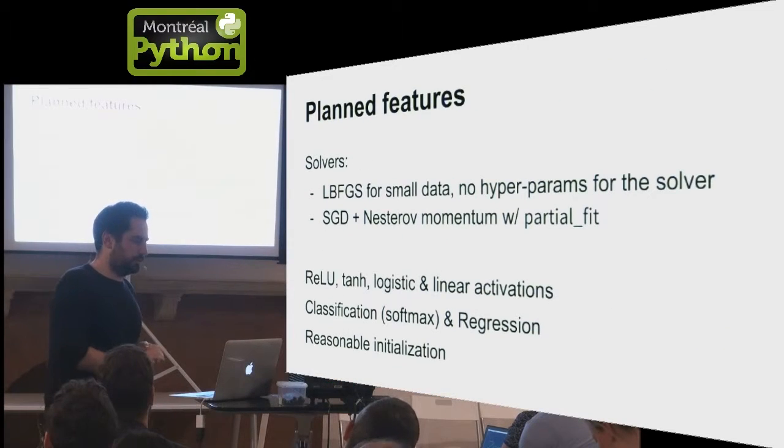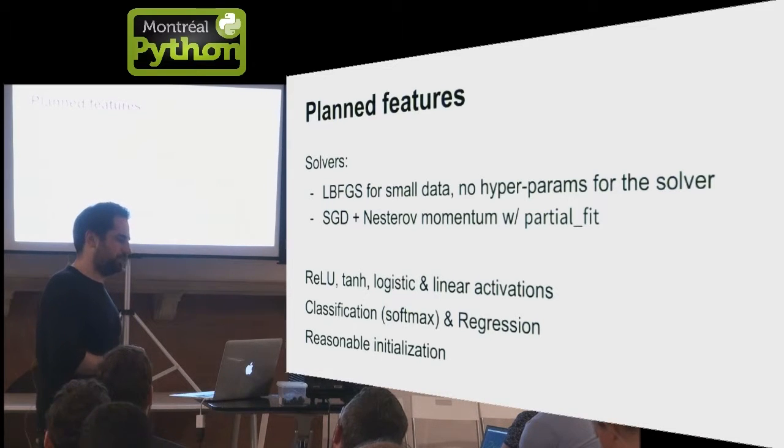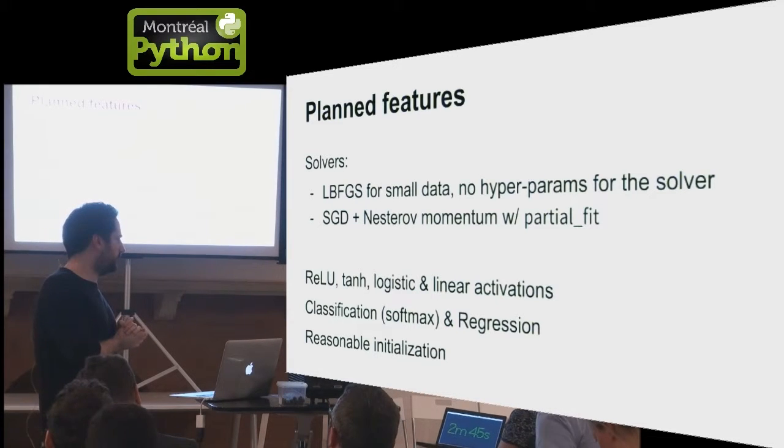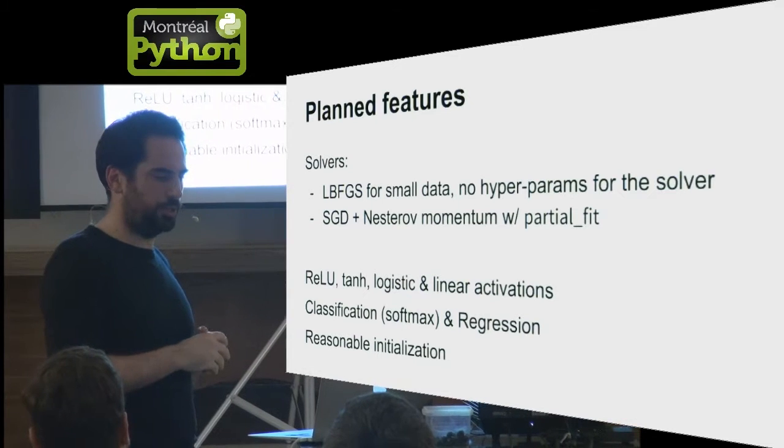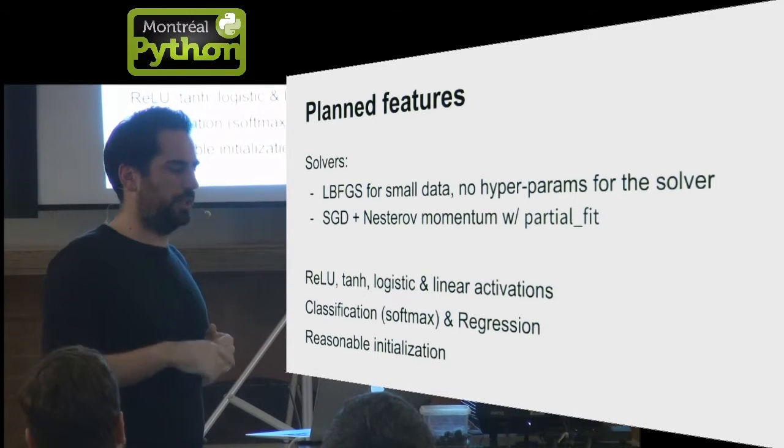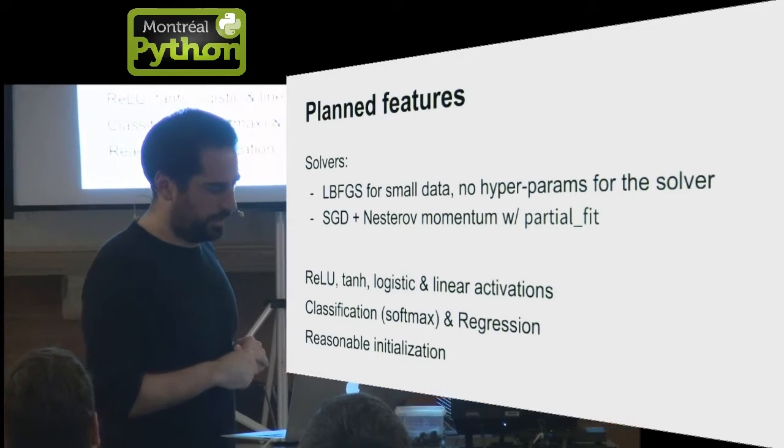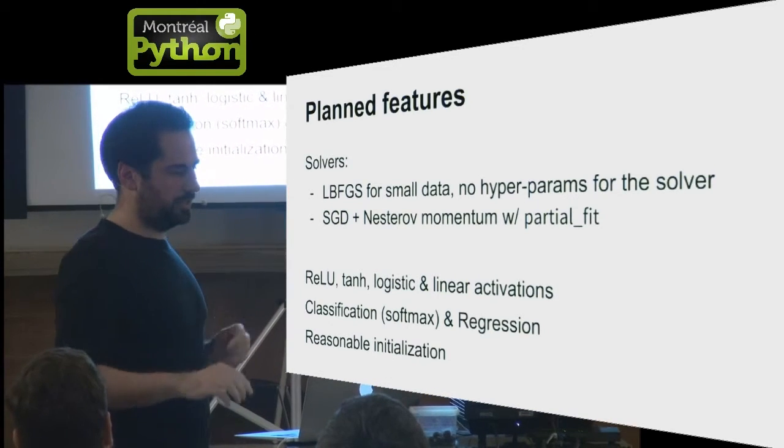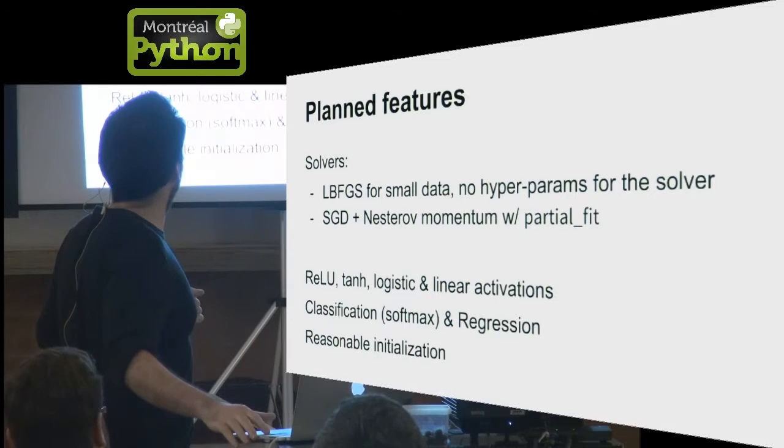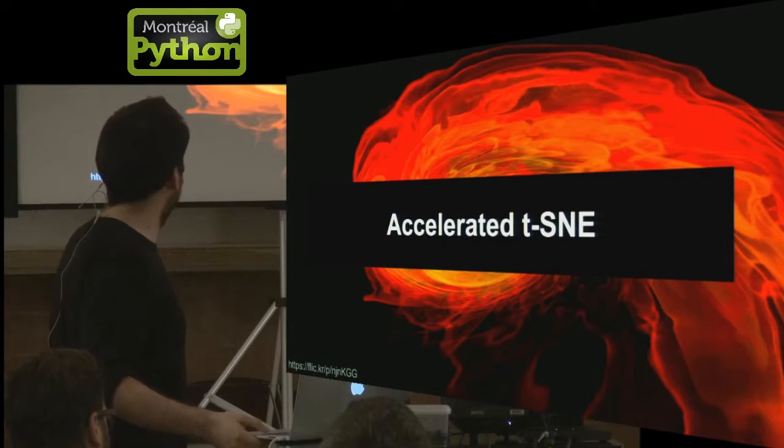We plan two optimizers. One optimizer which is good for small data, which is called LBFGS, which has no hyperparameter for the optimizer, so it's easier to use. And if your data doesn't fit in memory, we also implement SGD with Nesterov momentum with the partial fit API that we've seen with Birch, the same way to scan over the data even if it doesn't fit in memory. We try to provide reasonable initialization of the weight, which is very tricky to get right. So we try to follow the state of the art.